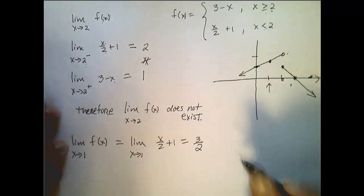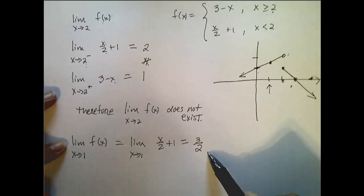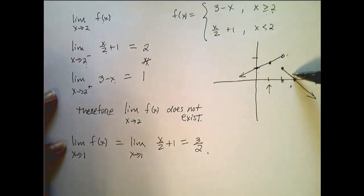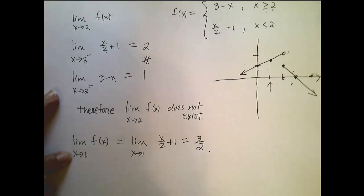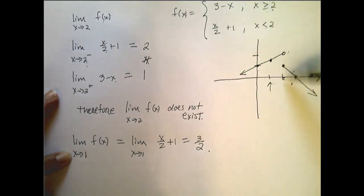So here, I don't have to look at left and right-handed limits, even though we have a piecewise function, because where I'm exploring the limit is not the place where I change definitions.